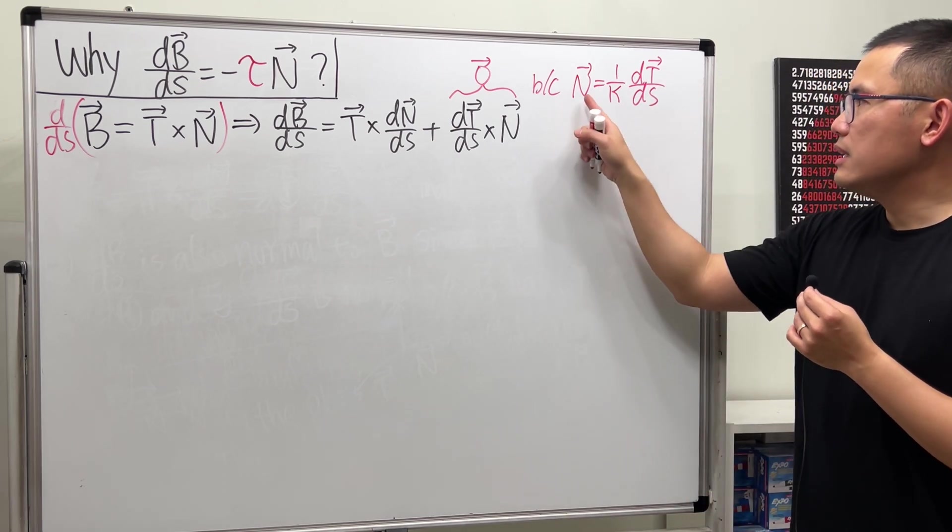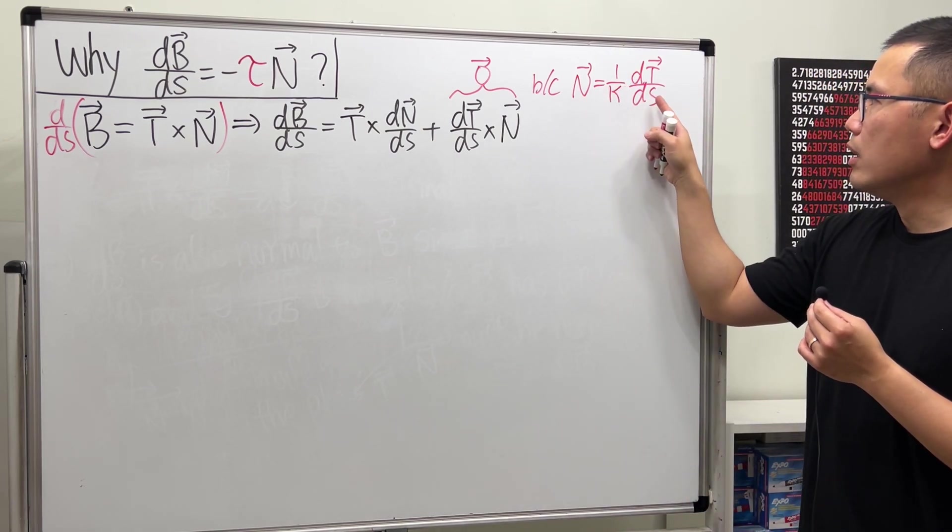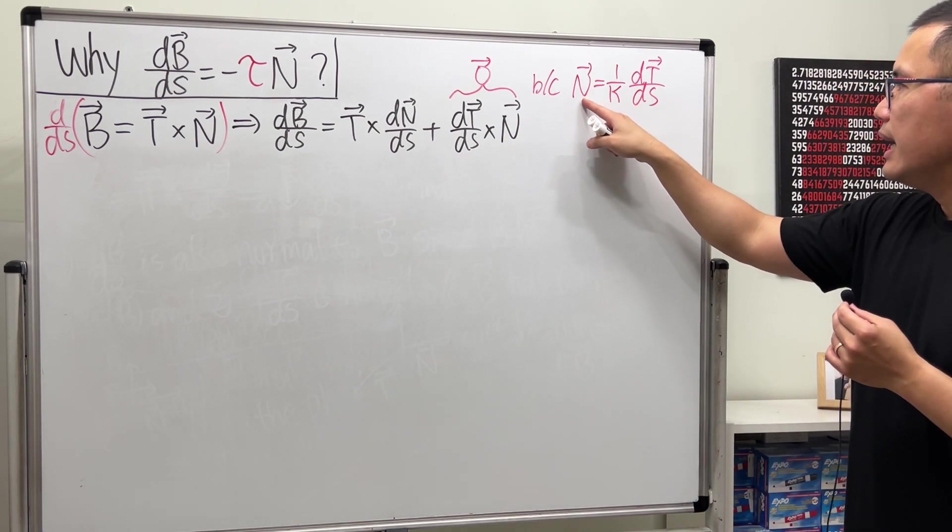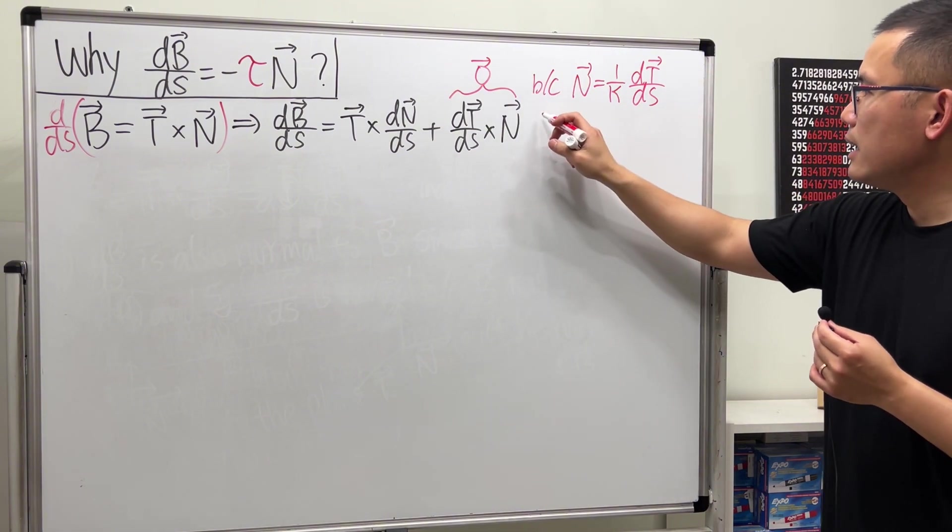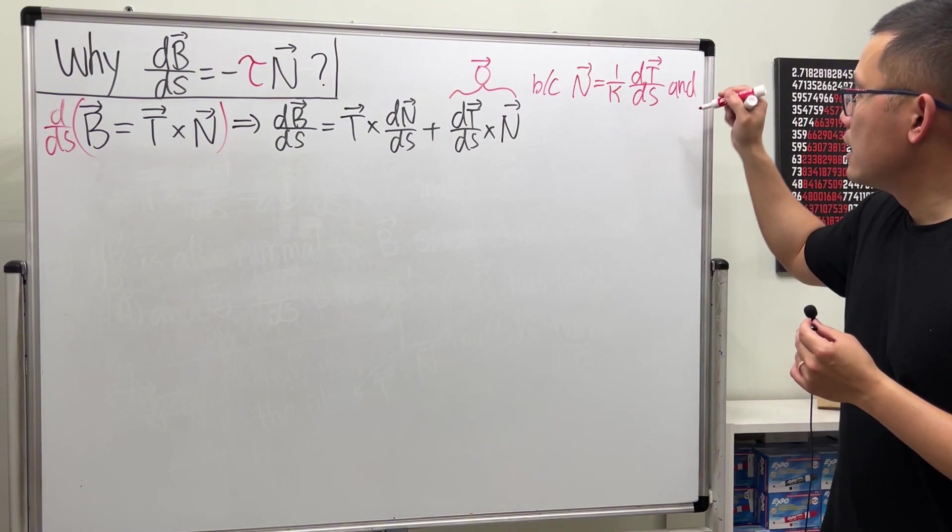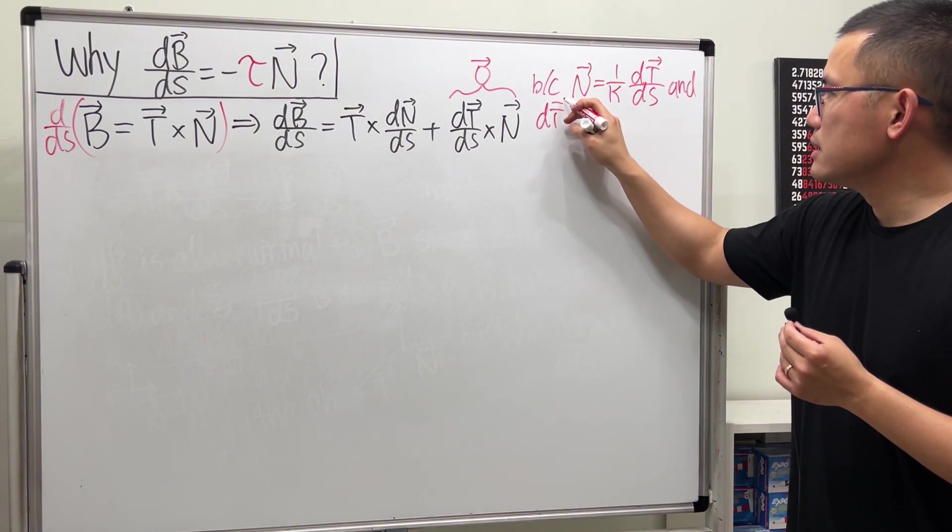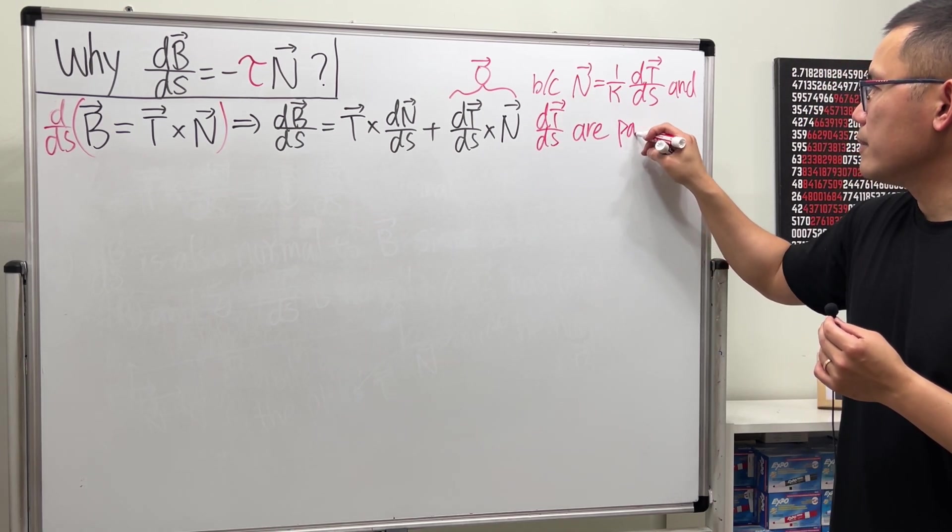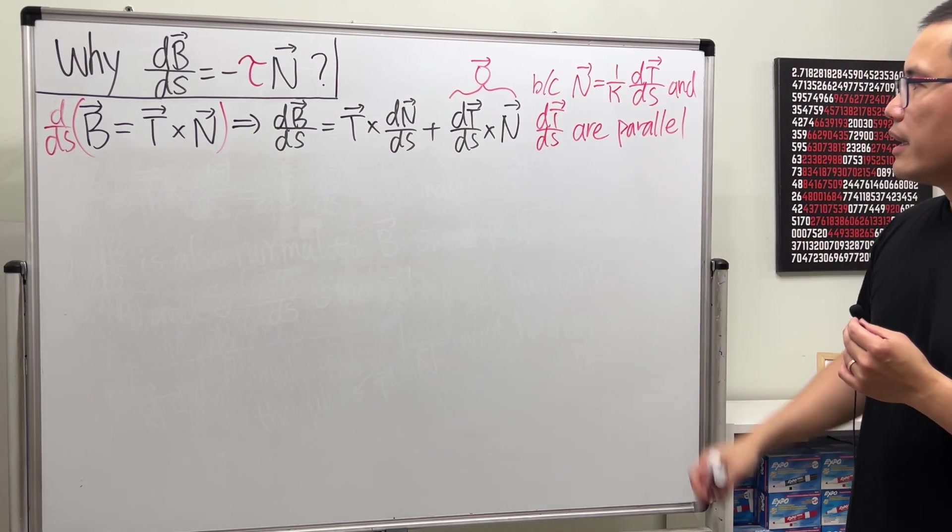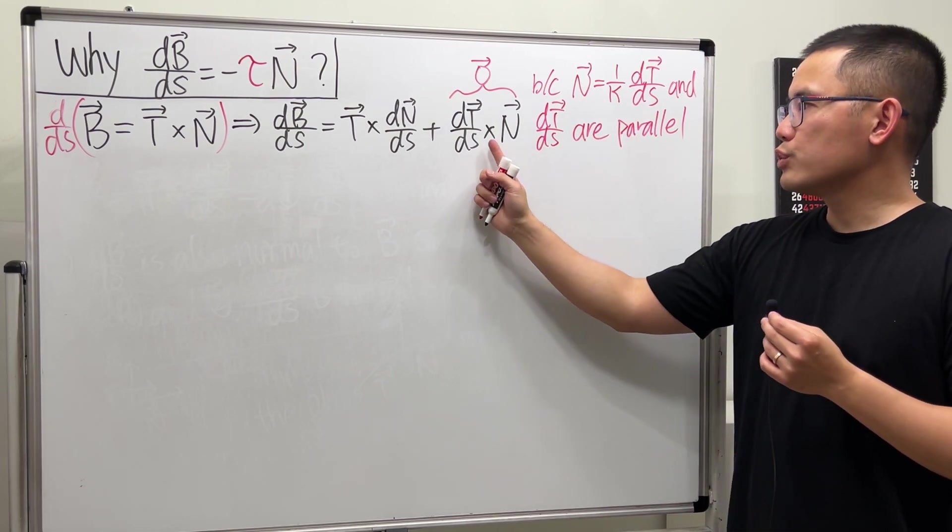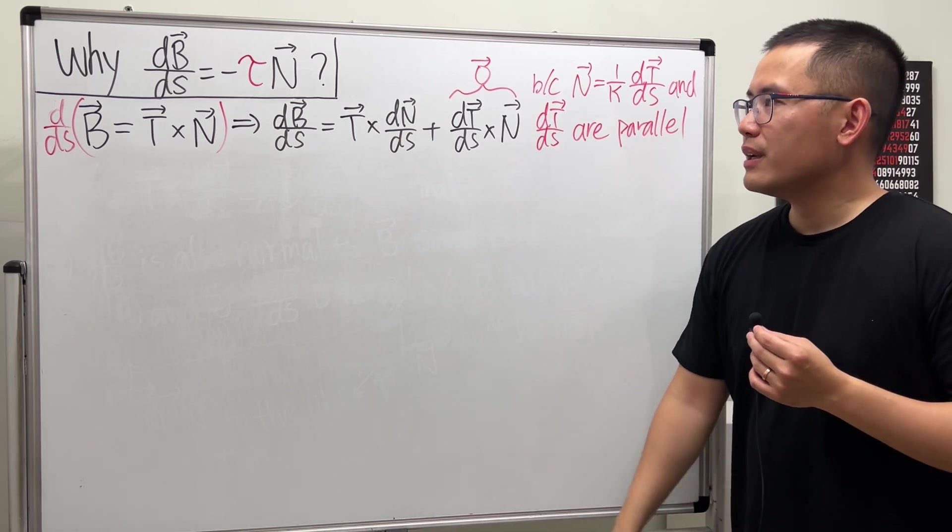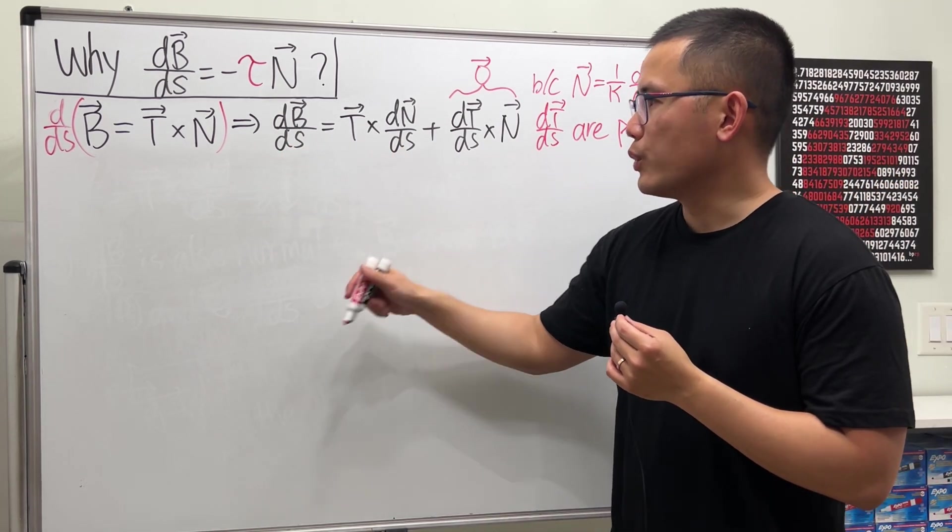So as you can see, N is just a constant multiple of dT/ds, which is this vector right here. So in another word, N and dT/ds are parallel. And when we have two parallel vectors, once we do the cross product, we will get the zero vector. So in fact, we just have this being equal to that.